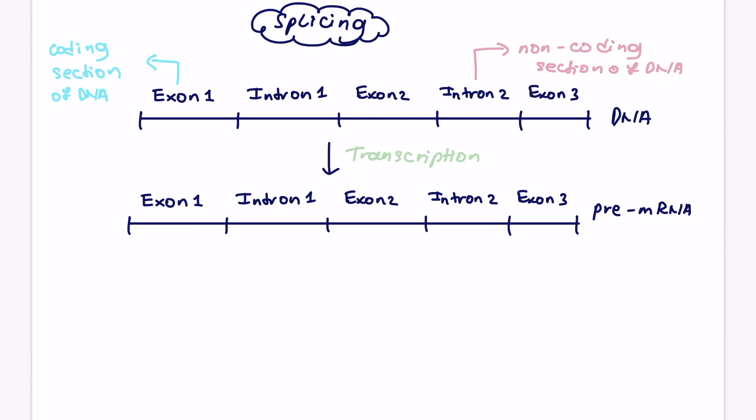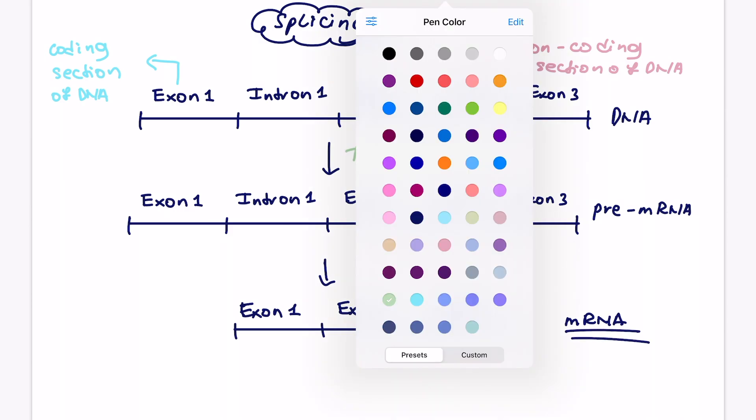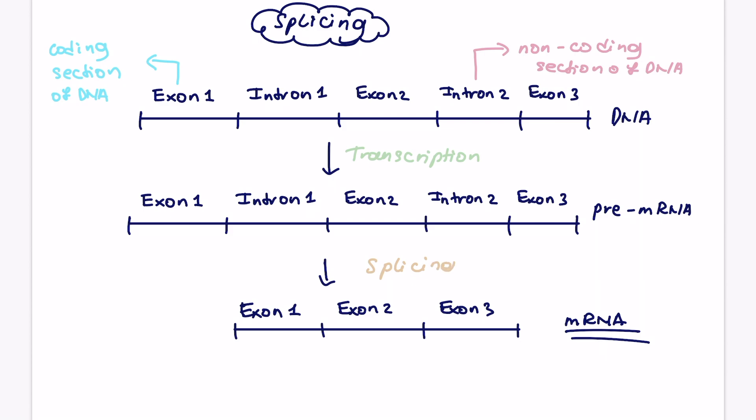So the purpose of splicing is then to cut those out. So what we're going to do, we're going to draw now an extra line, but we're actually going to just leave exons in and we're going to cut out the introns. So the process of splicing includes cutting out the introns and then joining exons together. And now we've produced mature mRNA, which is then ready to be transported out of the nucleus into the cytoplasm and to be translated.